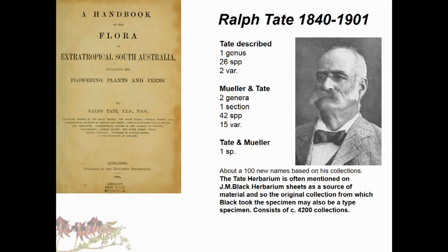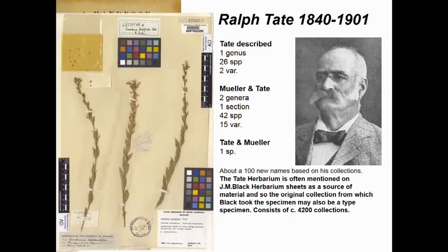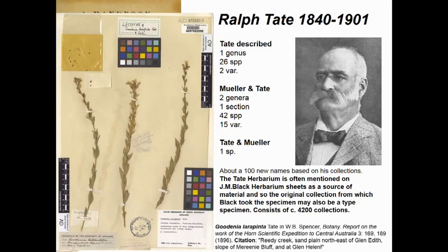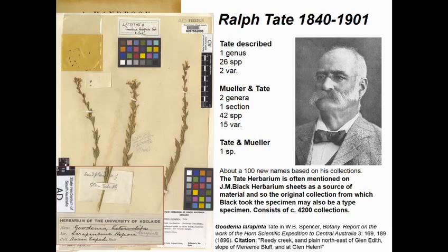Ralph Tate also described a number of new taxa, along with Ferdinand von Müller - about a hundred new names based on his collections. Here's an example: a Godinia larapinta specimen labeled as being from Glen Edith, making it a type. Someone has designated it as a lectotype, but they've labeled the whole sheet as a lectotype when one of the specimens on that sheet isn't even that species - pretty sloppy work.